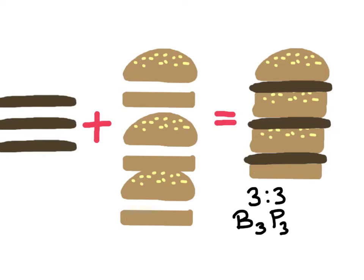So that's kind of like what the molecular formula would be like. The empirical formula for this burger recipe, or this final burger, would be just a 1 to 1 ratio, and that's the simplest whole number version.